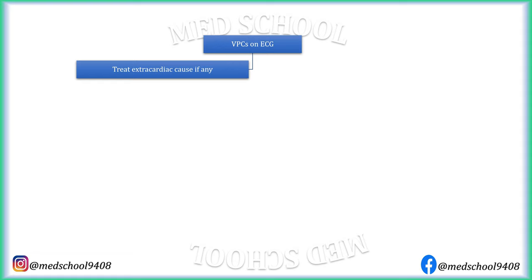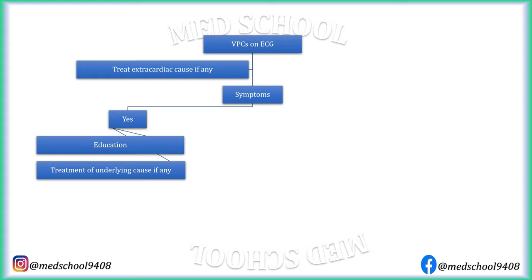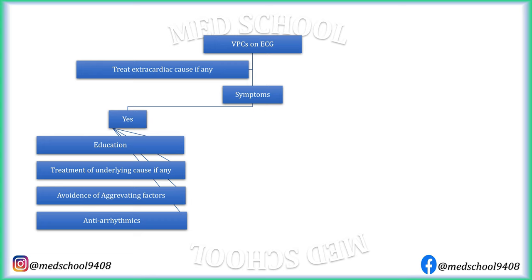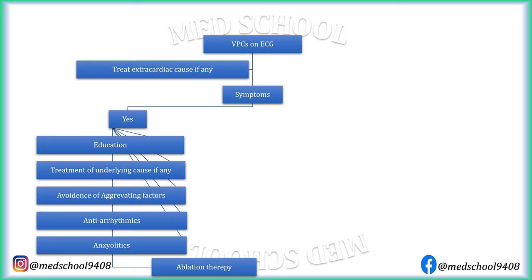If there are VPCs on ECG, first non-cardiac causes should be looked for and treated if found. Next, the line of action depends on the presence or absence of symptoms. If the patient is symptomatic, they should be educated regarding their illness. Underlying causes like valvular heart disease, electrolyte imbalance, and coronary artery disease should be treated accordingly. Aggravating factors like stress and caffeinated drinks should be avoided. Antiarrhythmics can be used if no relief with conservative treatment. Anxiolytics should be added if no relief with antiarrhythmic drugs. If the patient is not willing for lifelong pharmacological therapy, and VPCs are monomorphic with high risk for arrhythmia, then ablation therapy can be considered.